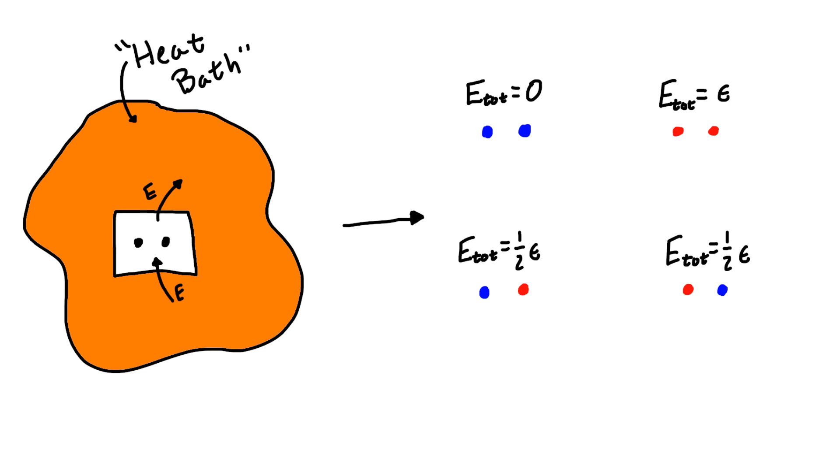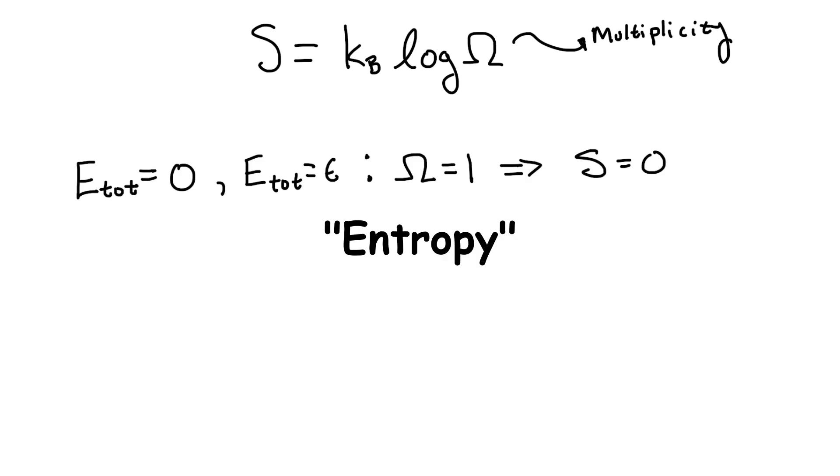Now we can use the formula for entropy that I talked about in a previous video where omega is the multiplicity, or in other words, the number of states corresponding to a given total energy. So the states with total energy zero and epsilon will have zero entropy, while the state with one half epsilon will have total entropy kb log two. But wait! We have the same number of high entropy states as low entropy states.